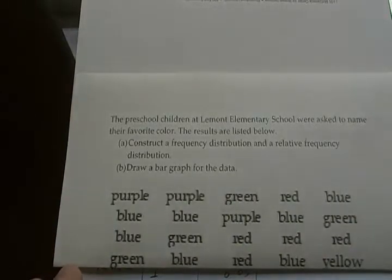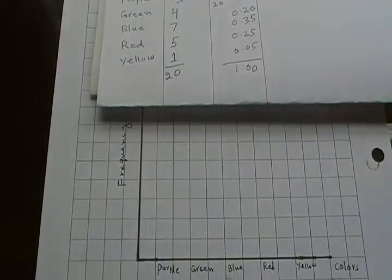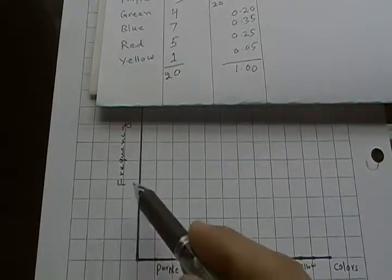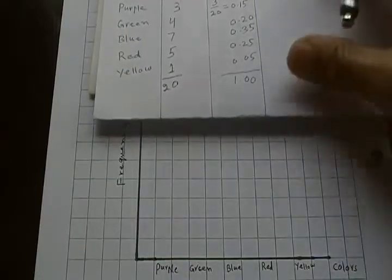Next is part B - we have to draw this bar graph. Let me bring in this graph paper here. I will keep this table with me. You have a vertical line and then horizontal line. In the horizontal line I draw the colors: purple, green, blue, red, and yellow. On the vertical line I would be drawing frequency.